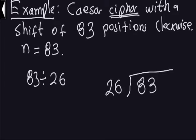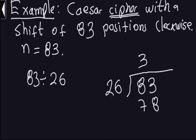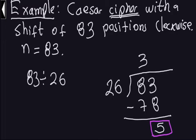Let's do the long division: I take 83 divided by 26. How many times does 26 go into 83? Three times. So 26 multiplied by 3 gives 78. I subtract 78 from 83, which gives me 5. The number 5 is the remainder — that's the number of positions you actually have to move. Moving 83 positions clockwise is exactly the same as moving 5 positions clockwise. The 3 is the number of times you go around the circle.